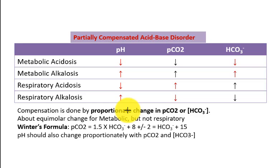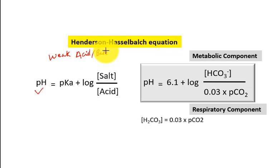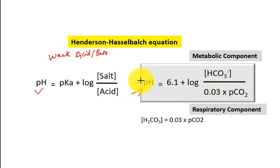When you understand one equation called the Henderson-Hasselbalch equation, it will be very easy to understand compensation and non-compensation. What is the Henderson-Hasselbalch equation? It is the equation of the chemistry of weak acids or bases. Any weak acid or base will have this Henderson-Hasselbalch equation. Remember, only a weak acid or weak base will function like a buffer. Here in our blood, bicarbonate is the buffer.